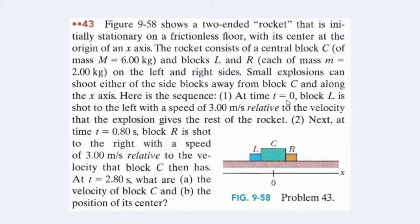At time t equals zero, block L is shot to the left with a speed of three meters per second relative to the velocity of the rest of the rocket. So as C moves to the right, L moves to the left with a speed of three meters per second relative to block C — in other words, it's moving away from block C at three meters per second.